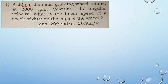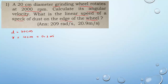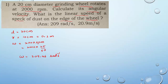Next question: a 20 centimeter diameter grinding wheel rotates at 2000 rpm. Calculate its angular velocity and the linear speed of a speck of dust on the edge. Diameter = 20 cm, so radius R = 10 cm = 0.1 m. Angular velocity ω = 2000 × 2π/60 = 209.46 radian per second.